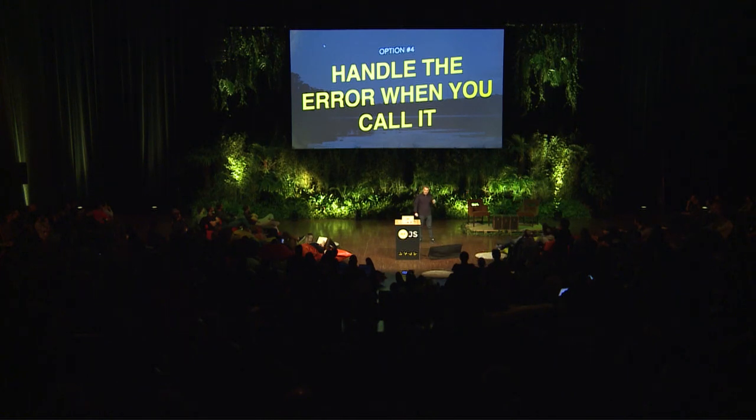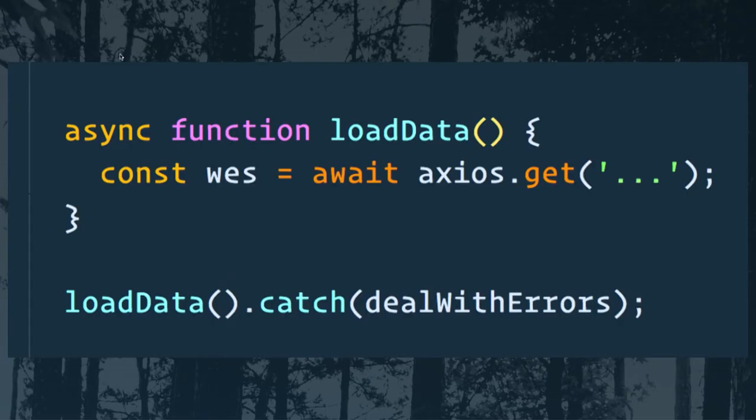The fourth option is to handle the error when you call it. Sometimes you do want to handle the error at the call site because it's a special case that needs to be handled differently. It's pretty simple — you make your async function called loadData and when you call it, you can just chain a .catch onto the end and deal with the error however you'd like.